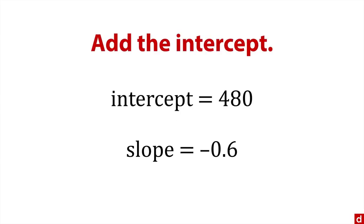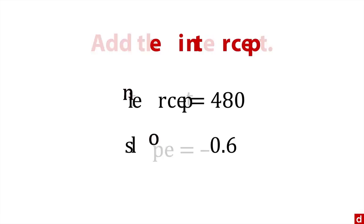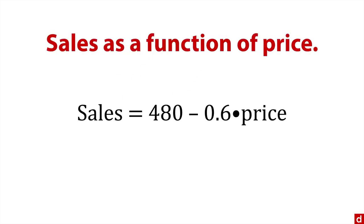What we have from this is sales as a function of price, where sales equals 480 minus 0.6 times price.